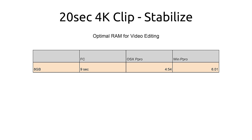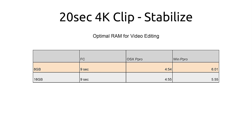With 8 gigabytes installed, Final Cut takes 9 seconds to stabilize a 20-second 4K clip. Moving over to Premiere Pro, it takes 4 minutes and 54 seconds on OSX and 6 minutes and 1 second on Windows — so it runs faster on OSX. Moving up to 16 gigs of RAM, Final Cut still shows 9 seconds, and Premiere Pro shows basically the same time on both OSX and Windows — just a slight speed increase, basically not noticeable.